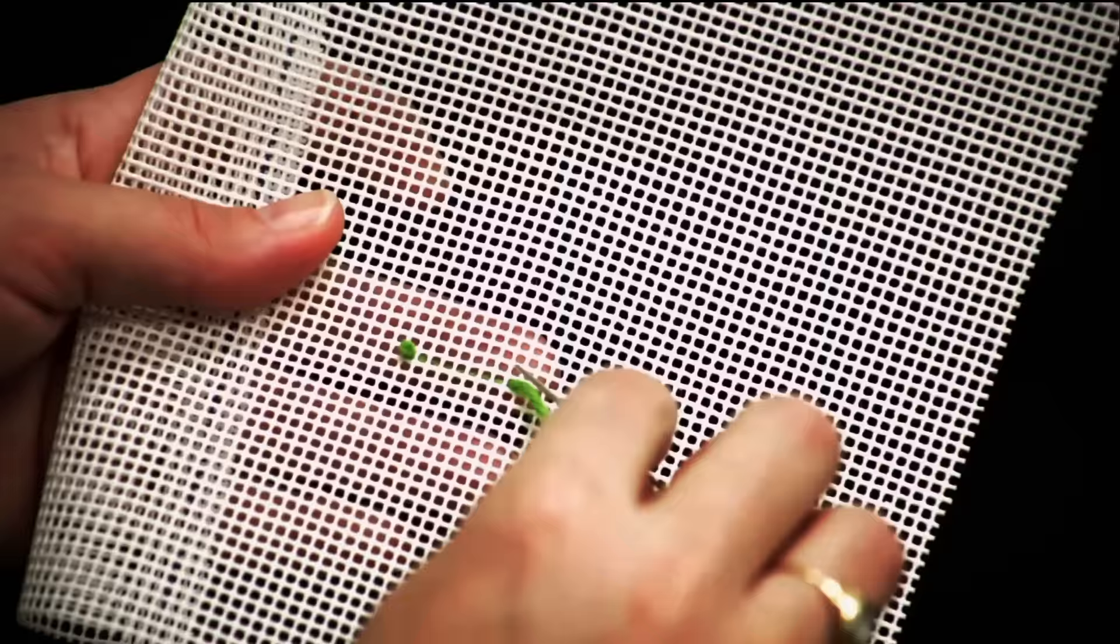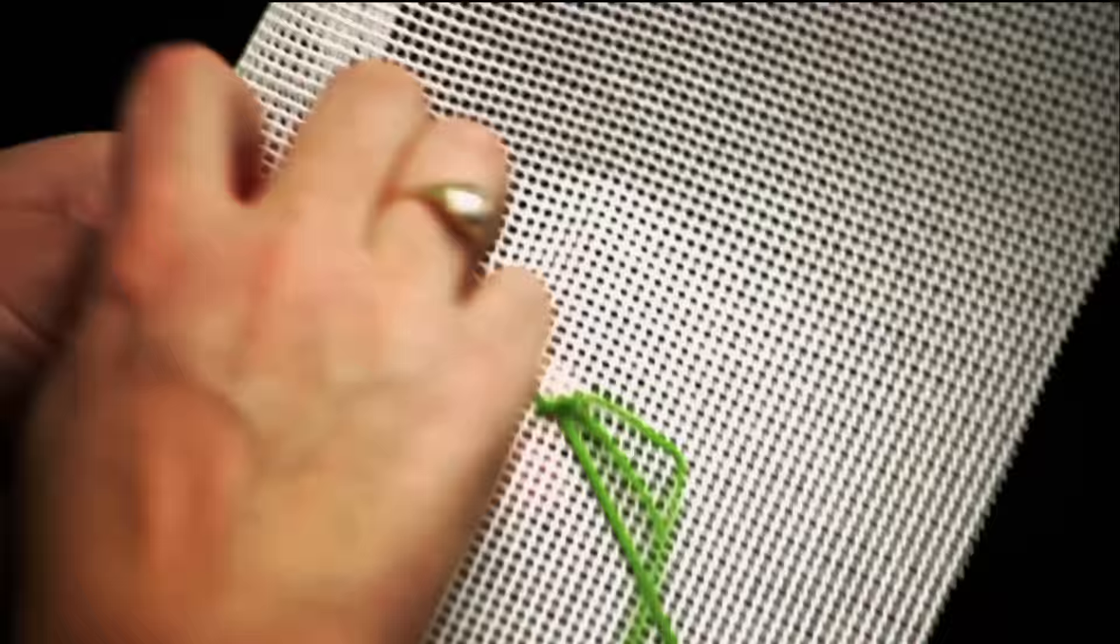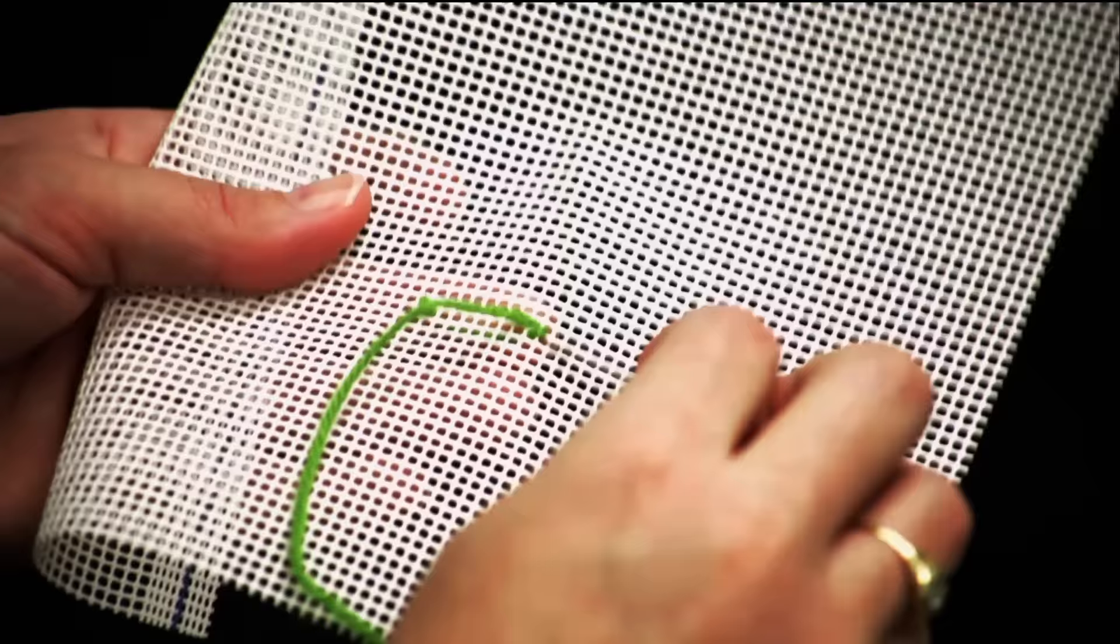Cross diagonally to the upper right. Push the needle under one canvas thread from right to left. Cross diagonally to the bottom right. Push the needle under two canvas threads and pull the thread completely through the canvas.